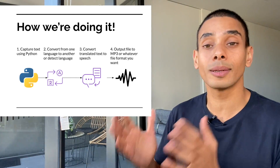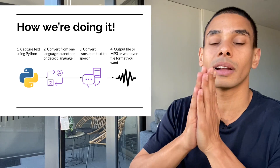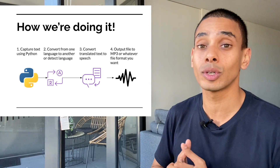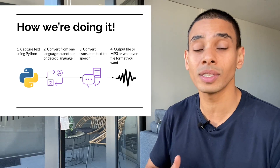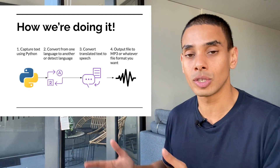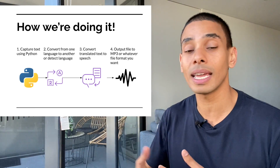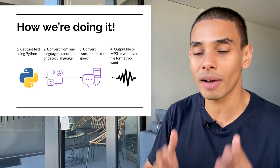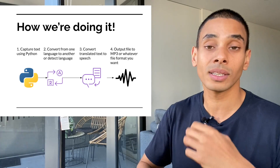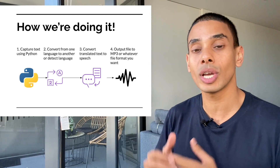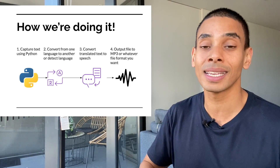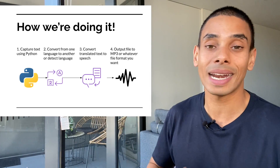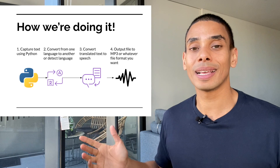In terms of how we're going to be doing it, we're going to be capturing text using Python inside of a Jupyter notebook. We'll then take that text, send it to the Watson language translator service to convert it into a different language. Likewise, we'll also do a similar thing in order to identify languages. And in order to build our AI-powered travel assistant, we'll take that same text, first convert it to a different language, and then send that converted text to our text-to-speech service in order to generate our AI-powered speech. Ready to get to it?